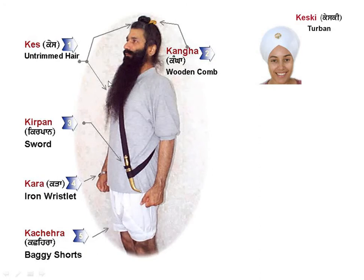You can see a Sikh man with all the different Ks on. He's got his Kara on his wrist, he's wearing the Kachera shorts, he's got his Kirpan, he's got Kesh — untrimmed hair — and he's got the Kanga comb. You can also see a female Sikh wearing a turban.